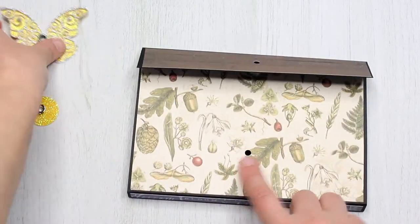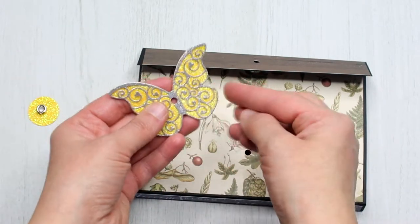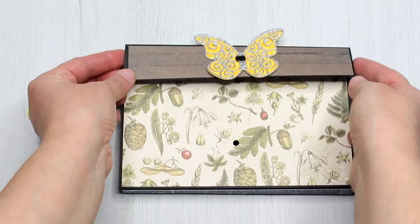For the string tie you need to punch a hole onto the top flap and another one onto the body of the folder. As I'm adding a butterfly onto the flap I punch a hole into this one as well.